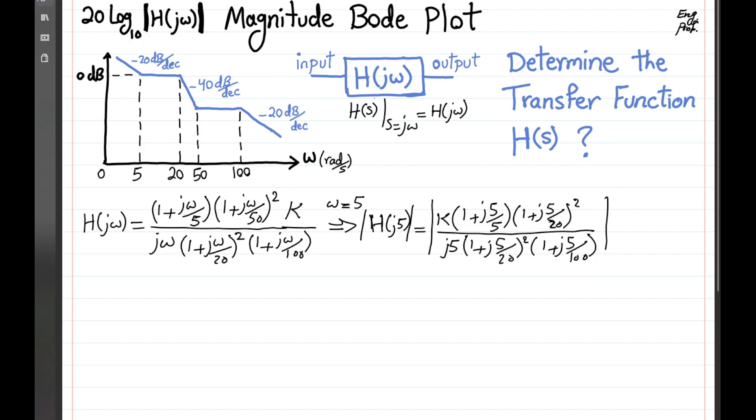We can effectively consider that these guys have a magnitude of 1, roughly. And the only components that have a considerable magnitude to consider are the remaining components, so it would be k magnitude of 1 plus j5 over 5 is 1 plus j, and then in denominator we have magnitude of j5, which is simply 5.